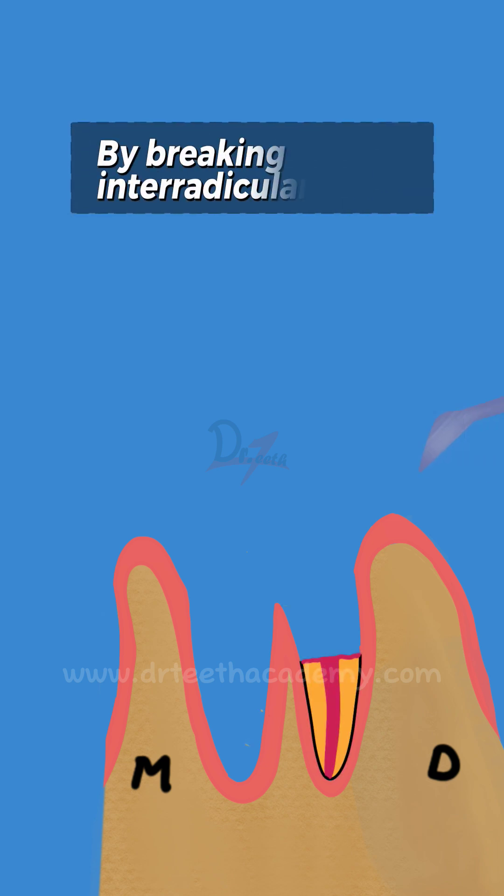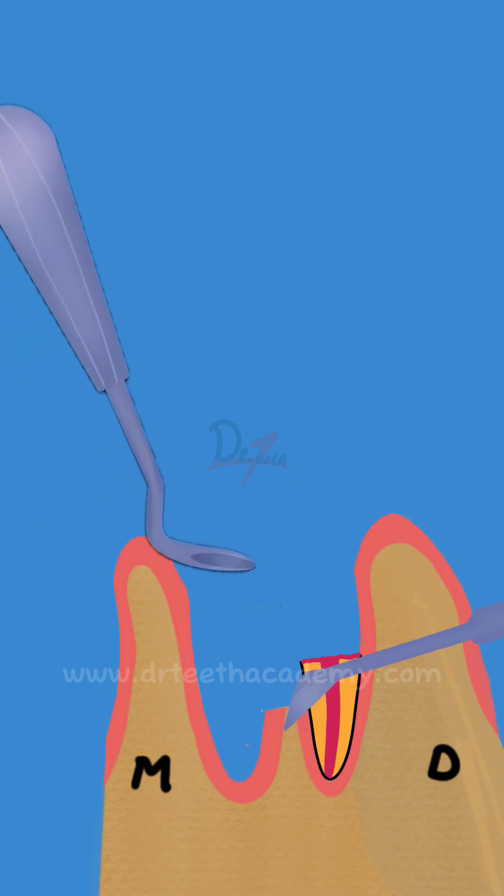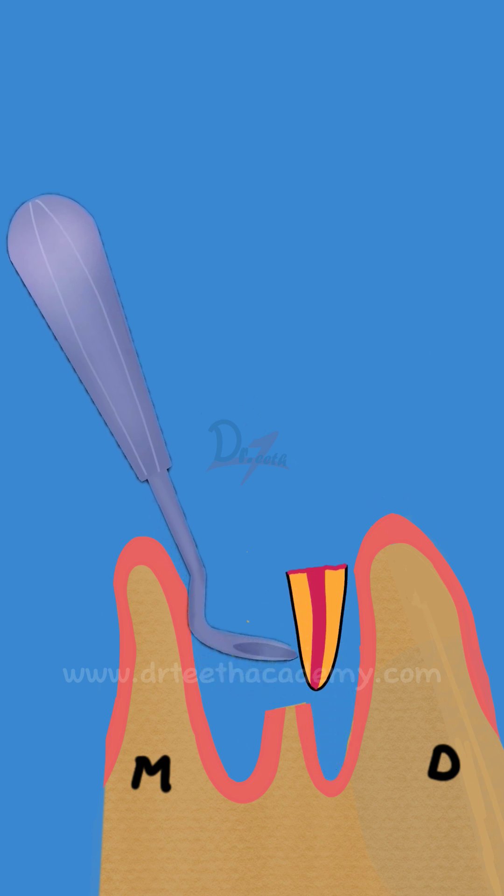Other method is to break the interradicular bone using a crier, so that we can remove the root piece from the socket of the other root. As you can see here. All right.